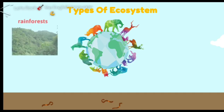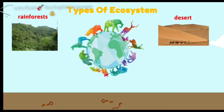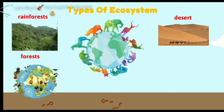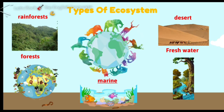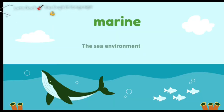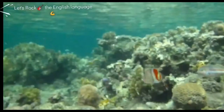We have many types of ecosystem, like rainforest ecosystem, desert ecosystem, forest ecosystem, and freshwater ecosystem — the water that we can drink — and also the marine ecosystem. Our lesson is about the marine ecosystem specially. Marine means the sea environment. How could there be a relationship between the living and non-living under the sea? That's what we're going to see now.